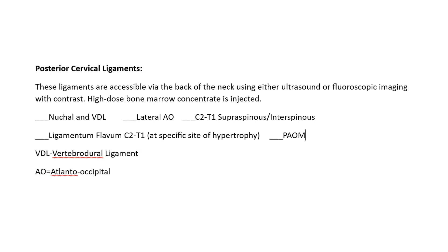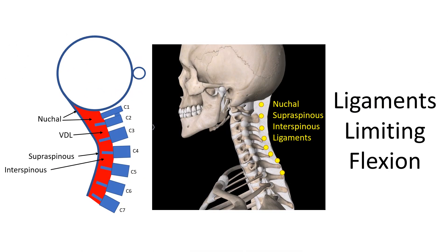Posterior cervical ligaments are ligaments that can be reached from the back. We use both ultrasound and/or fluoroscopic imaging depending on the ligament. The common ones here would be the nuchal ligament at the very top, the vertebral dural ligament between C1 and C2, the supraspinous and interspinous ligaments. These are the ligaments that limit flexion. So if there's C2-3 instability in flexion or any of the other instabilities in flexion, these ligaments might be helpful. For some types of instabilities we need to hit the anterior ligaments as well, but it's always a good idea to start with a posterior ligament injection because that's less invasive to see if that helps in instabilities involving flexion.